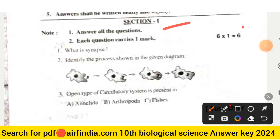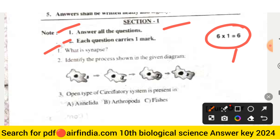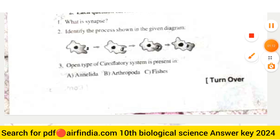Section one starts with six marks. Answer all the questions; each question carries one mark. The first question is: What is synapse? The second question is: Identify the process shown in the given diagram — there are some pictures given for question number two.